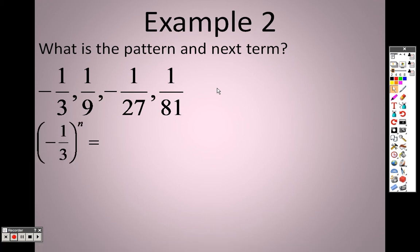The problem is finding out what that pattern is, and here is the pattern for this one: it's negative 1 third to the n power. If you want to see if that works, plug in a 1. If I plug in a 1, negative 1 third to the 1 is negative 1 third. If I plug in a 2, that's like saying negative 1 third times negative 1 third.